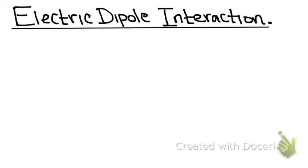In the previous video on transition rates, we arrived at Fermi's Golden Rule, which is applicable to a variety of interactions. One such interaction is the electric dipole interaction, which we are going to look at in this video. A vital application of time-dependent perturbation theory is to study the interaction between an atom and the electromagnetic field — this will tell us how lasers and atoms interact.